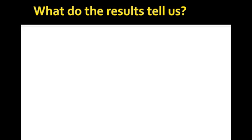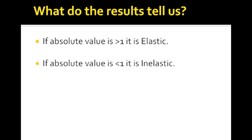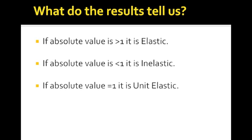Second question. What do the results tell us? They tell us three things. If the absolute value is greater than 1, it is elastic. If the absolute value is less than 1, it is inelastic. And if the absolute value equals 1, it is unit elastic. Those are the three basic things we can get from the midpoint formula results.